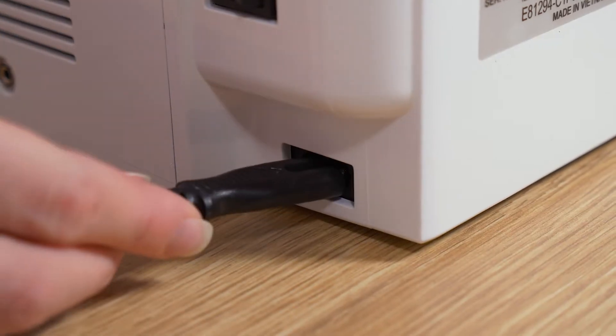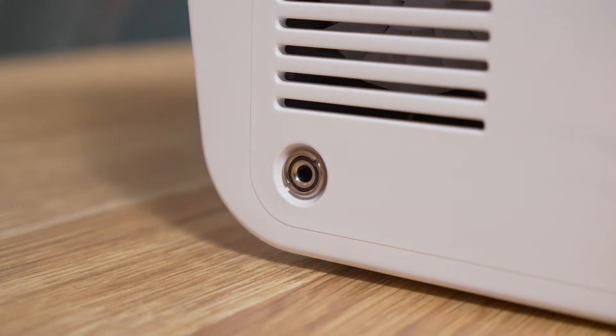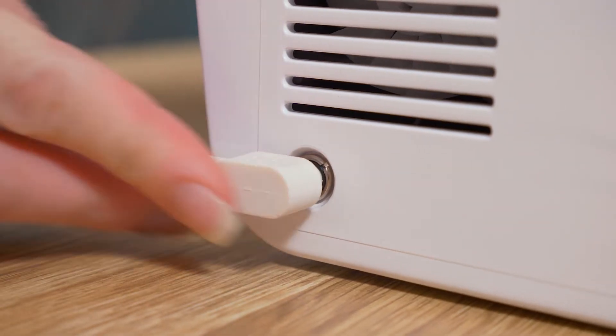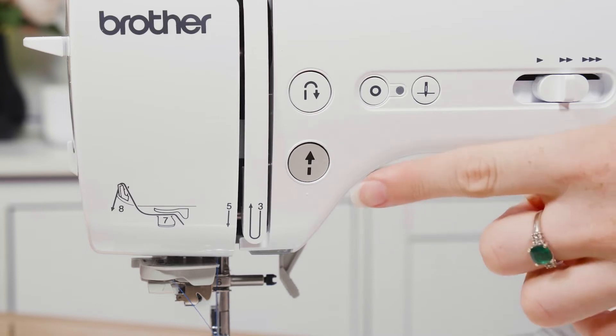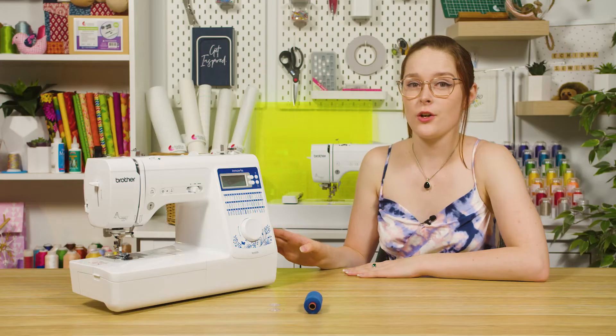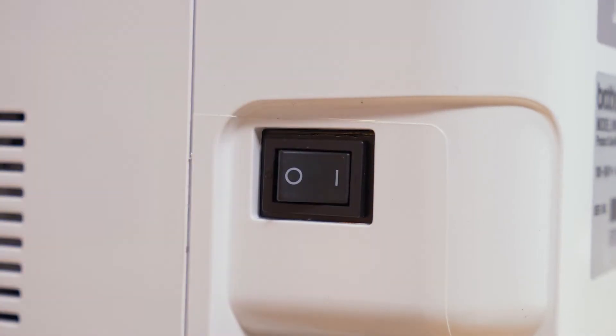We're going to start by plugging your machine into the power, then plug in your foot control. When sewing, you can either use the foot control or the start-stop button. You can turn the machine on by pressing the button on the right side.